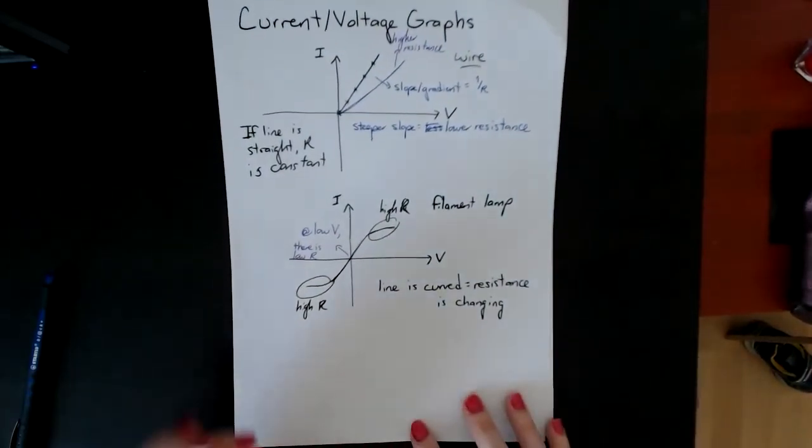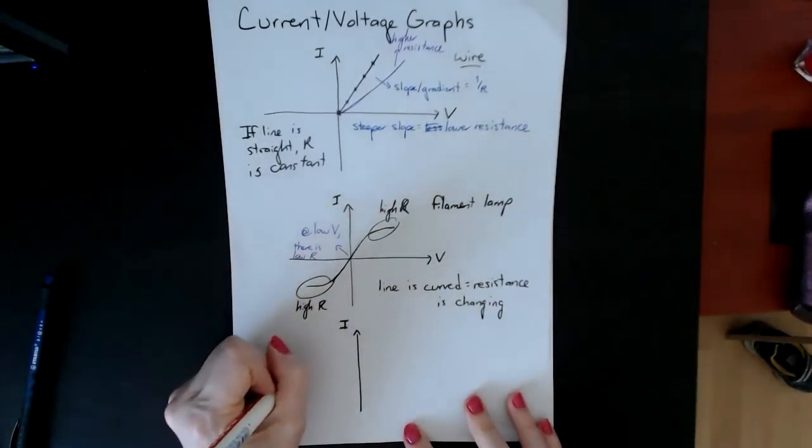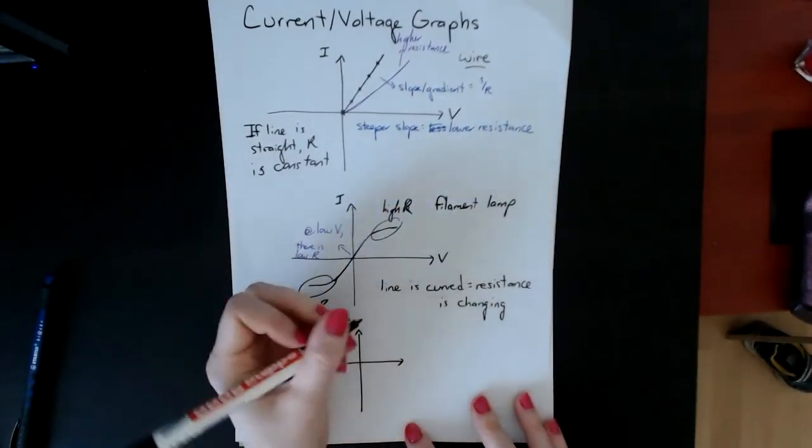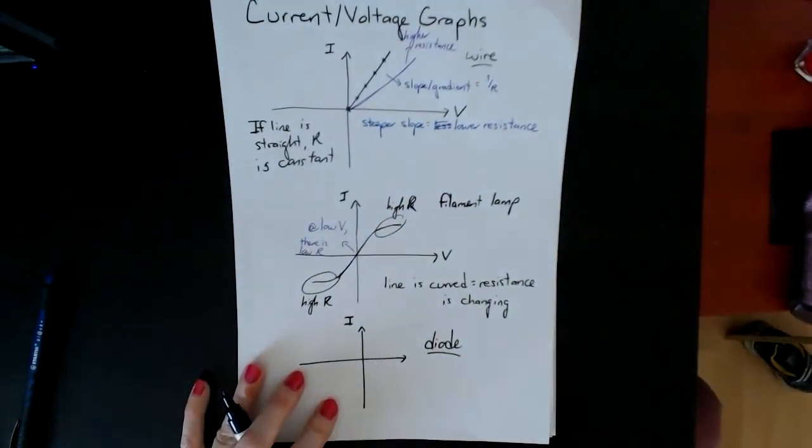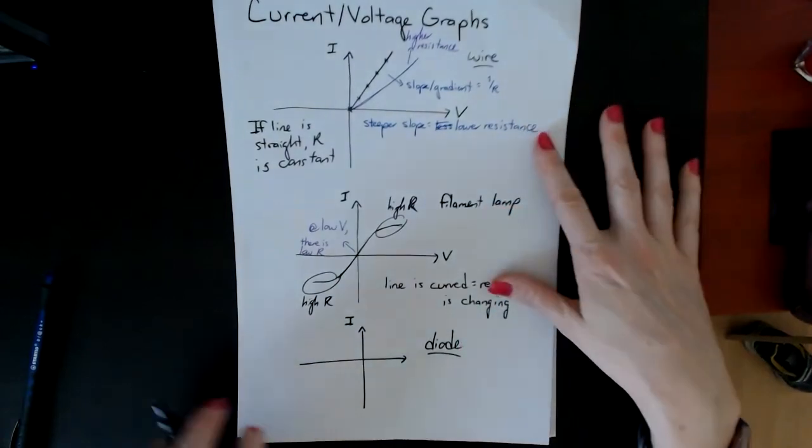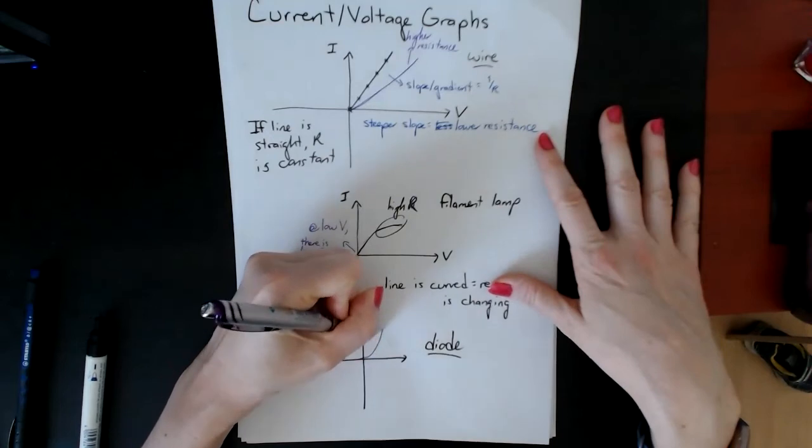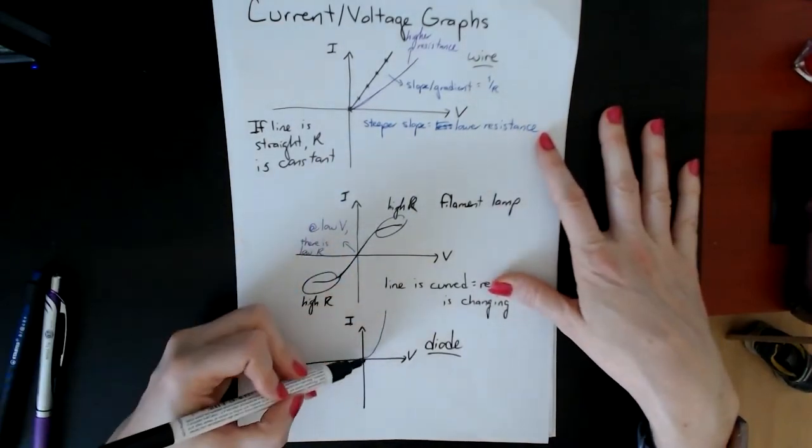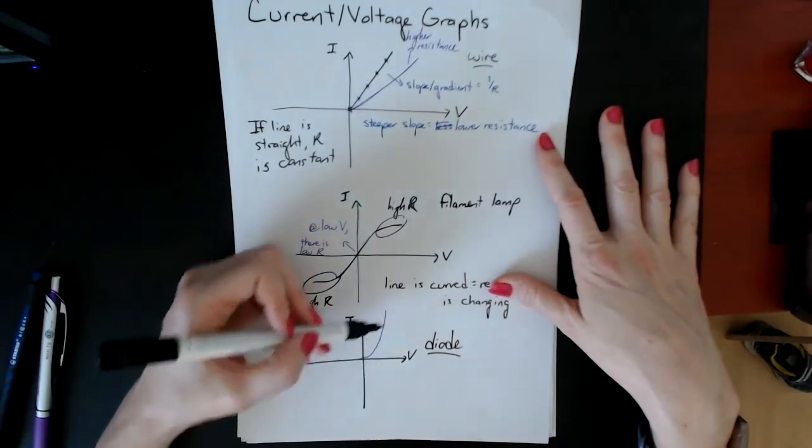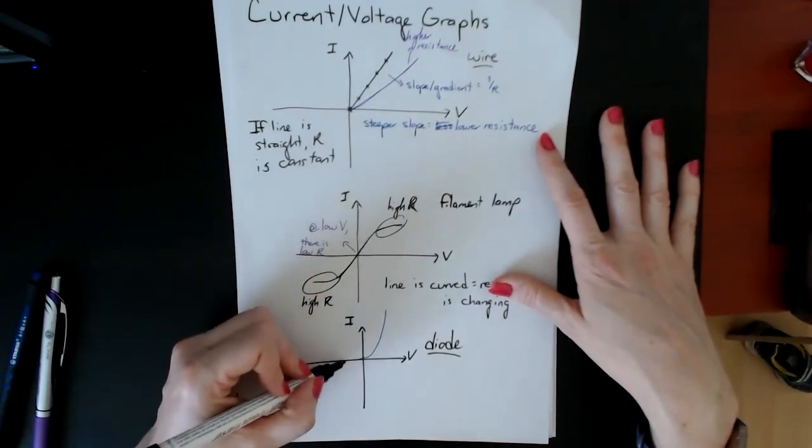The last type of current-voltage graph you should be aware of is fairly straightforward. If you need a reminder of what a diode is, check the resistor video. A diode is going to have a curve that basically looks like this. That means if you have voltage traveling one way on the positive side, it's going to be extremely low resistance. This is a very steep slope here.